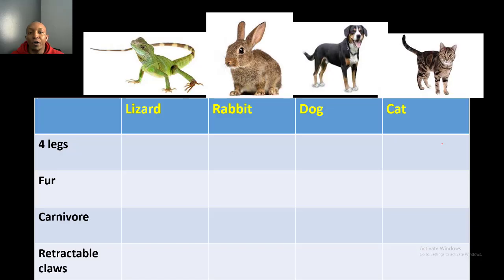On this chart I have four organisms listed: a lizard, a rabbit, a dog, and a cat. Over here to the side going down we have the characteristics that these organisms may possibly have. What we're going to do is go across each organism and see if they have that characteristic, and we'll put a check to signify that they do.